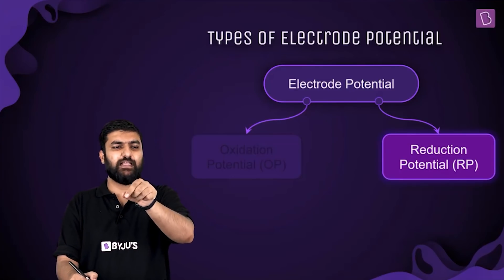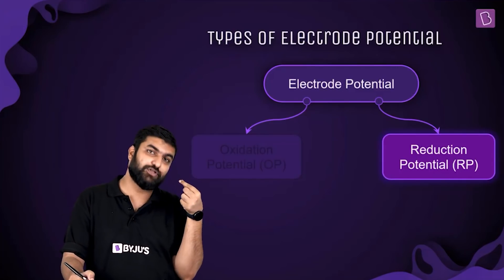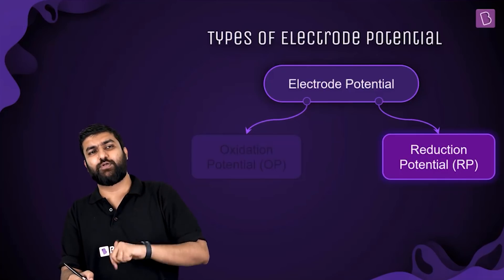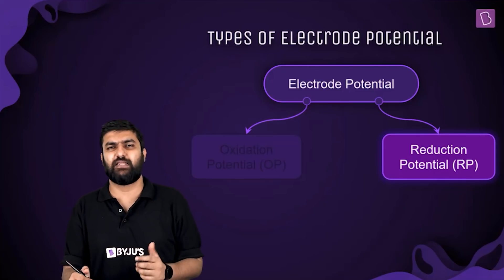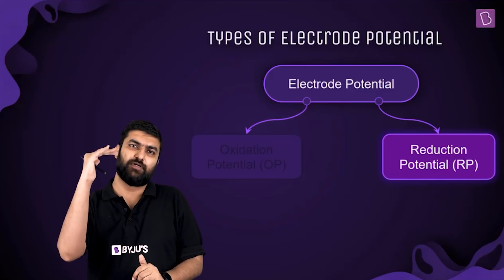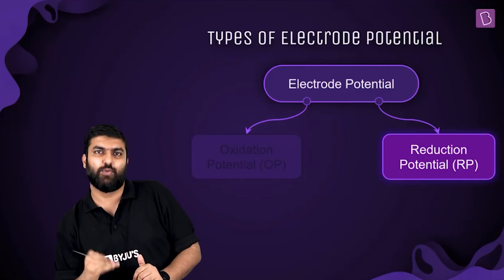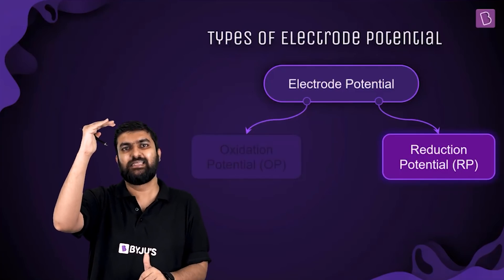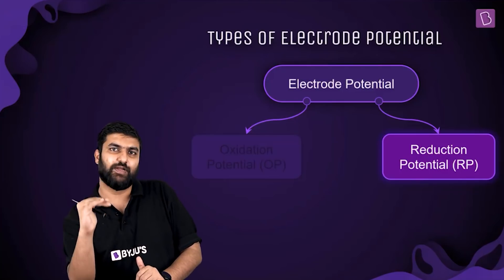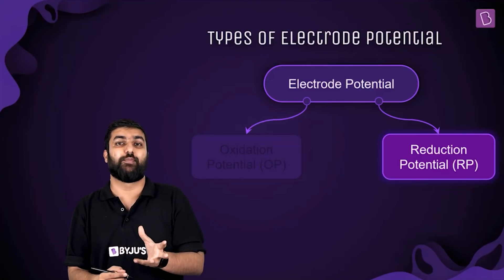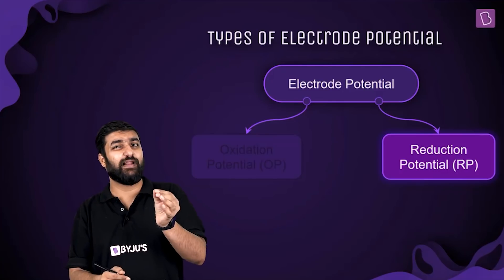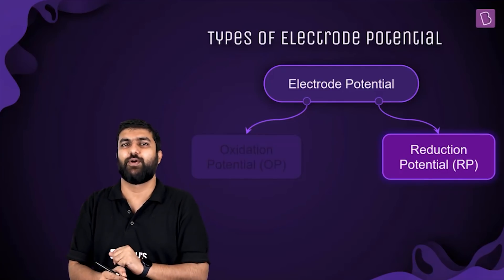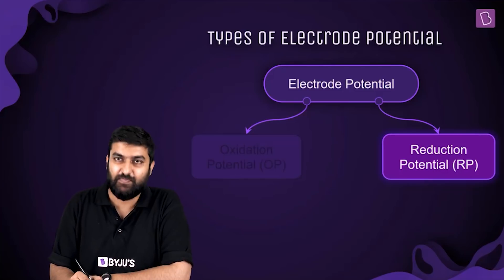You should remember and understand the representation — you should be able to look at a representation and construct the reaction from it. Later, when we cover the electrochemical series, you will need to remember sequences like which element has a higher oxidation tendency compared to another, but exact numerical values are not required.